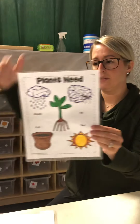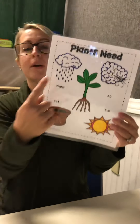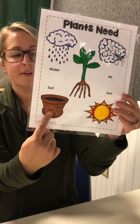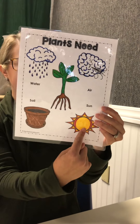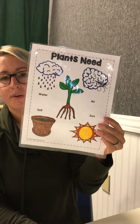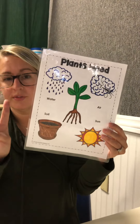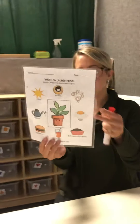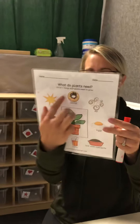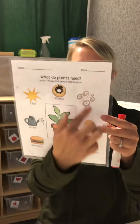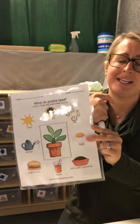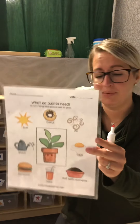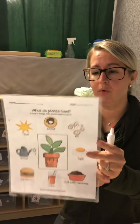Let's say them together: a plant needs water, soil or dirt, sun, and air. Those are the four things it needs. Now let's look at our activity. Look at all these things around the plant — we need to figure out which ones a plant needs to grow and which ones it does not need to grow.